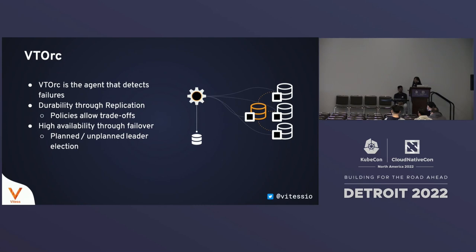Let's get a little deeper into what VTOrc is doing. VTOrc is the agent that monitors the Vitess cluster and detects failures — it checks for certain conditions at periodic intervals and flags failures. Once it detects a failure, it goes through a repair or recovery mechanism. Vitess achieves data durability through replication: one primary and more than one replica guarantees that any accepted transaction is replicated to at least one replica, so in case of disk or node failure, you don't lose data the client thinks has been persisted.